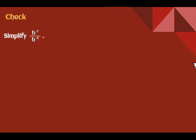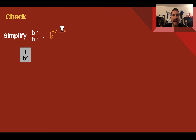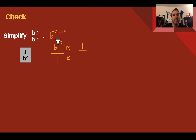Check your understanding: simplify the given expression. The answer is 1 over b to the third power. Using quotient of powers first with base b: negative 7 minus negative 4, which is really negative 7 plus 4, gives b to the negative 3. Then applying the negative exponent rule — put it in the denominator and make it positive — we get 1 over b to the third.